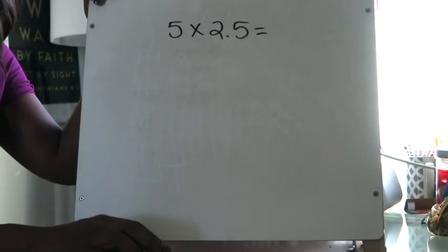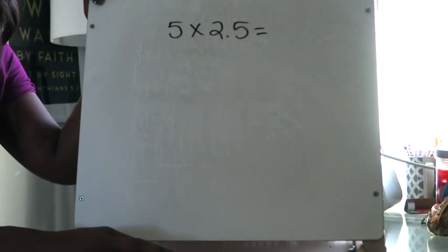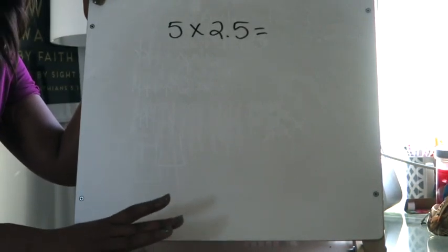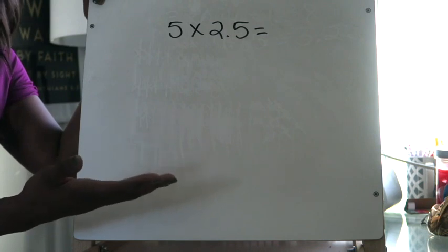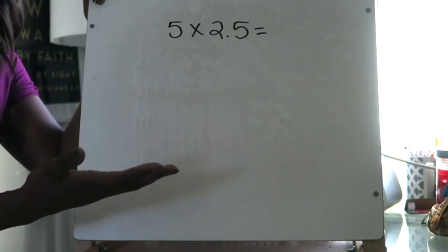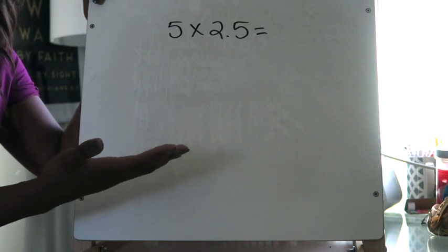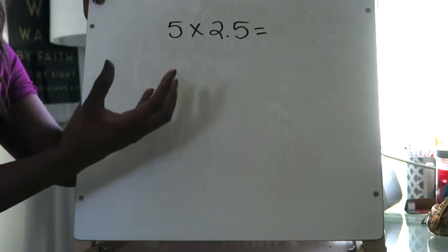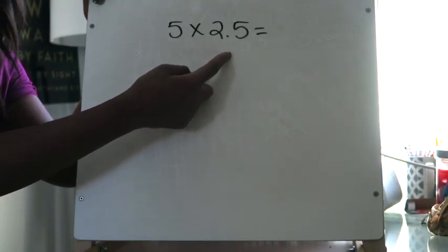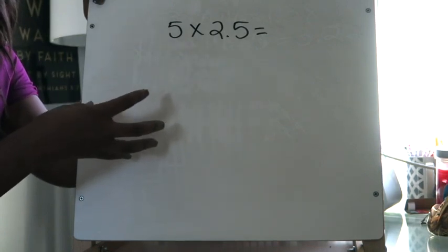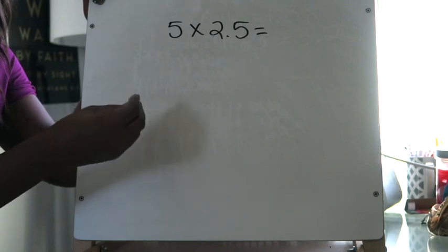If you remember when we first talked about the distributive property, I explained it like this: pretend you're going to the gym and you're lifting weights. You pick up a really heavy weight — you would never try to pick it up with just one arm. You always use both arms because it makes the work a little bit easier. That's how I like to think of the distributive property. I'm taking a number that is difficult — maybe it's really large, or in this case it's a decimal — and I'm going to break it up into two easier parts to manage.